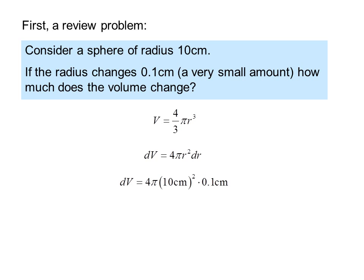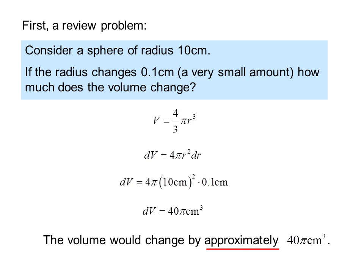We take the differential of both sides using the chain rule on the right-hand side. And then, we plug in 10 centimeters for r and 0.1 centimeters for dr, the small change in r. And our result is dV equals 40 pi centimeters cubed. The volume would change by approximately 40 pi centimeters cubed.